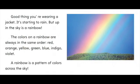Good thing you're wearing a jacket. It's starting to rain, but up in the sky is a rainbow. The colors on a rainbow are always in the same order: red, orange, yellow, green, blue, indigo, violet. A rainbow is a pattern of colors across the sky.